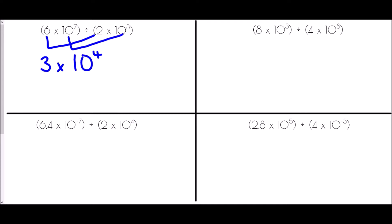For 8 times 10 to the power of 3 divided by 4 times 10 to the power of 8: 8 divided by 4 is 2, and then 10 to the power of 3 divided by 10 to the power of 8 means we subtract the powers — 3 take away 8 is negative 5. So the final answer is 2 times 10 to the negative 5.